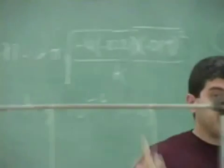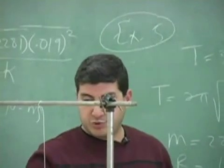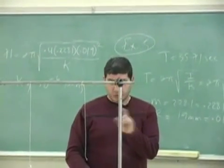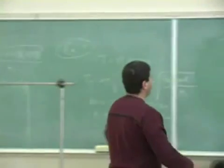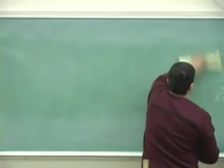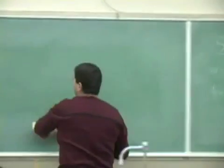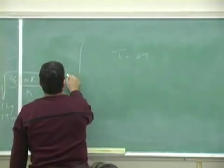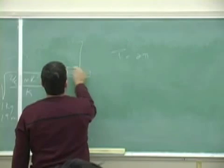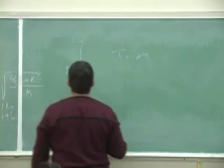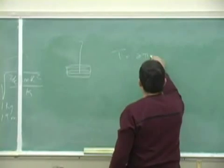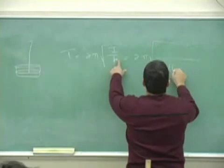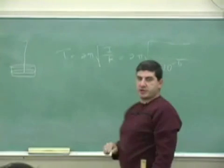So now, if I put the same string and I put the hanger and the weight and I do that, we should be able to predict the period, right? So now I have a hanger like this from the same string. This is 10 to the negative 6. And then what's the moment of inertia of the hanger?